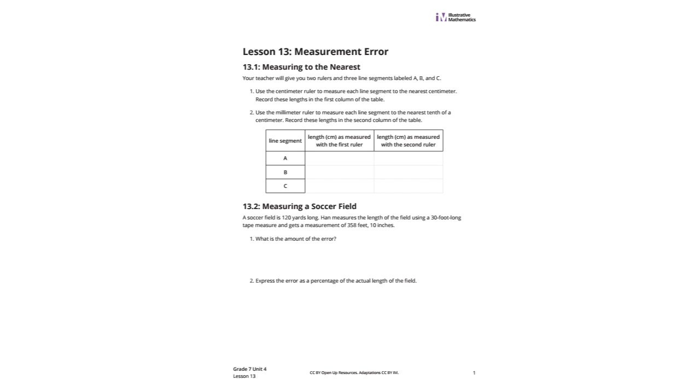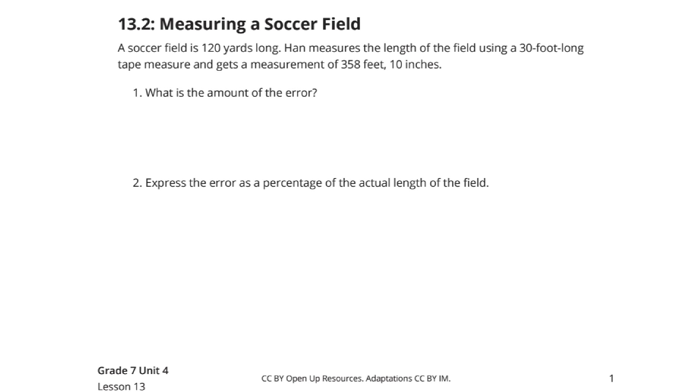As we look at measuring a soccer field to get started here, a soccer field is 120 yards long. Hahn measures the length of the field using a 30-foot-long tape measure and gets a measurement of 358 feet 10 inches. So what is the amount of error?